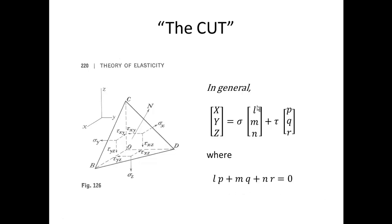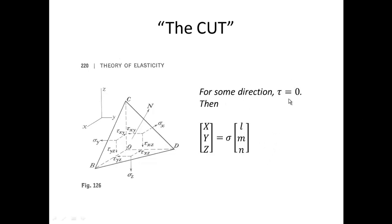Remember that the vector l, m, and n is a vector normal to the plane and the vector p, q, and r is a vector that is in the plane or tangent to the plane. That's in general. But in the special case we would have where tau equals zero and actually the stress components would be in the same direction as the normal scaled by what would be a principal stress.